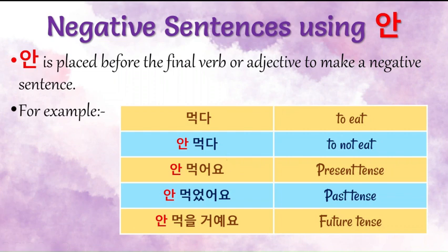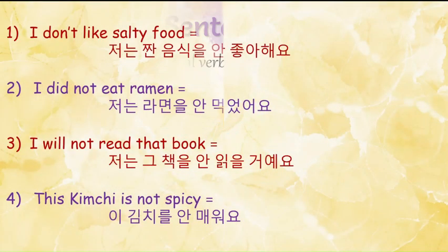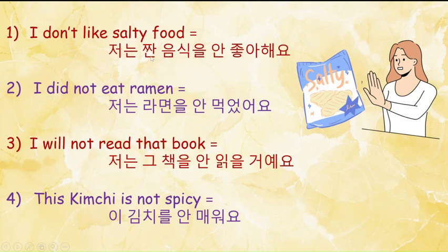Now let's see some example sentences to understand the usage of 'an'. First one is: I don't like salty food. So in Korean it is 'chanen mshikal an chawayo'. Here we have used 'an' just before the final verb 'chawayo'.